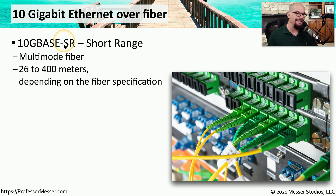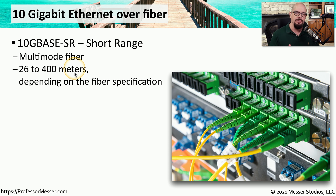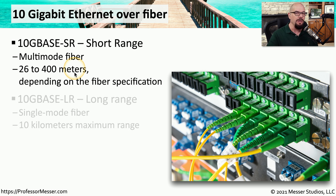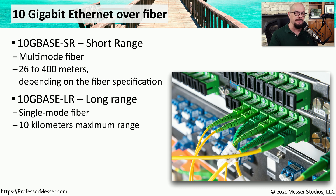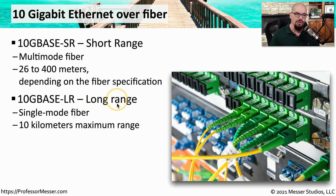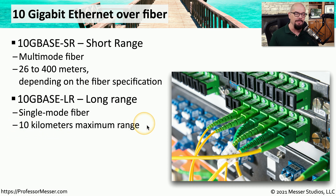10 Gigabit Ethernet standards are also available for fiber. The 10GBASE-SR (short range) uses multimode fiber and supports 26 to 400 meters depending on fiber type. For very long distances, the 10GBASE-LR (long range) uses single mode fiber and can extend up to 10 kilometers.